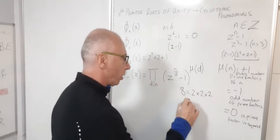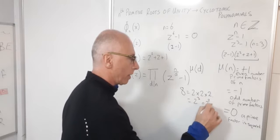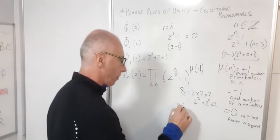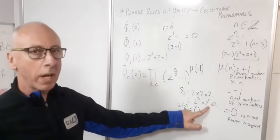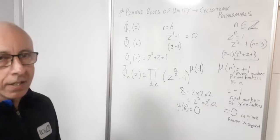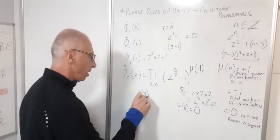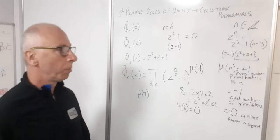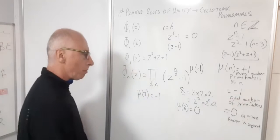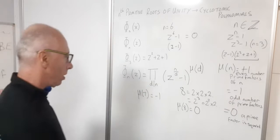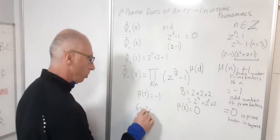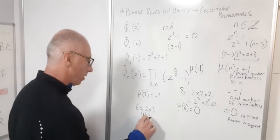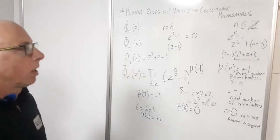Mu(n) equals minus one if n has an odd number of prime factors, and it equals zero if any prime factor appears squared. For example, mu(8) equals zero because 8 = 2^3 contains 2^2 as a factor. Mu(7) equals minus one since 7 has one prime factor, and mu(6) equals plus one since 6 = 2×3 has two prime factors.